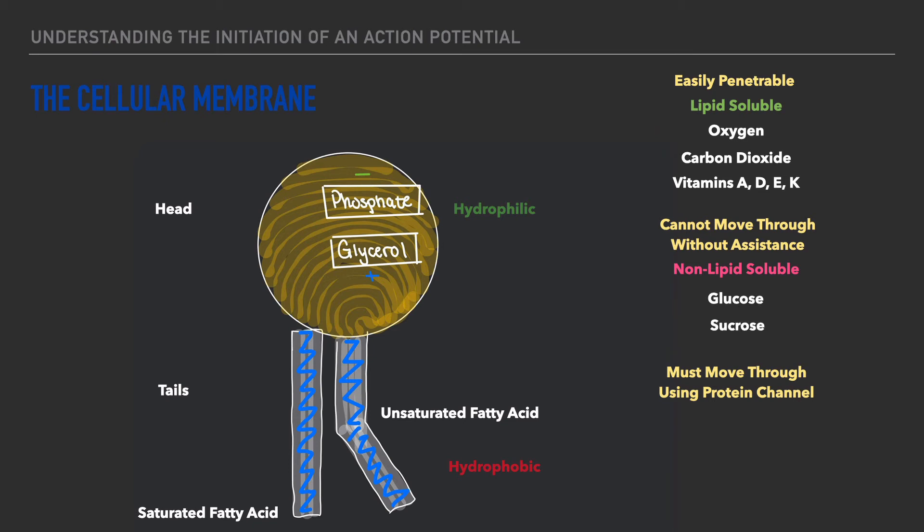And last but not least the components that can only move through the cell using designated channels are specifically ions and this includes sodium potassium and chloride.